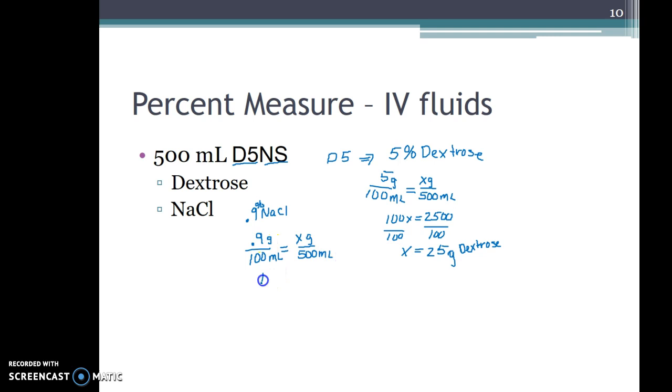Again using cross products, 100x equals 0.9 times 500, which gives 450. Divide by 100 on both sides and we end up with x being 4.5 grams.